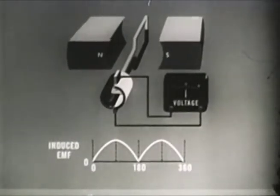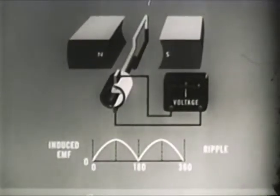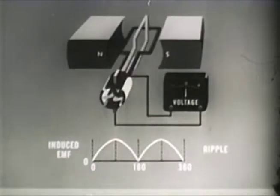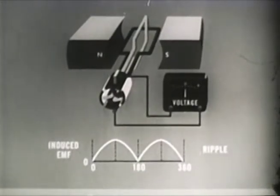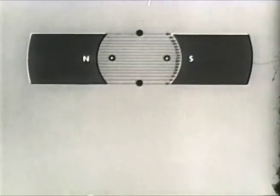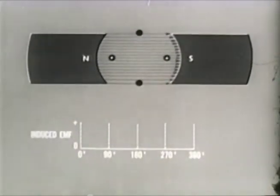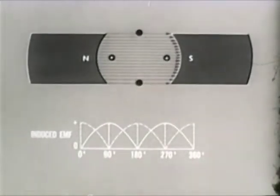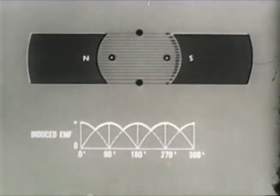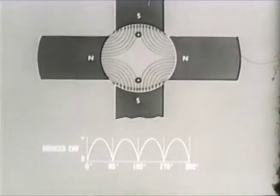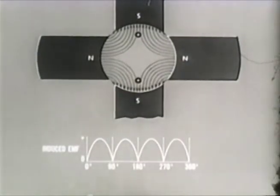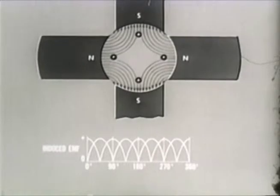The pulsation from zero to maximum, twice for each revolution of the loop, is called ripple. This ripple can be reduced by adding more loops and more commutator segments to the existing armature. Two loops at right angles connected to four commutator segments provide two outputs instead of one. These outputs are 90 degrees displaced, which combine to smooth the DC output. However, even with two loops and four commutator segments, the rectified curve is still somewhat irregular. By adding magnets, we increase the number of fields cut by the armature. As we increase the number of loops and commutator segments, the variation between maximum and minimum value decreases.